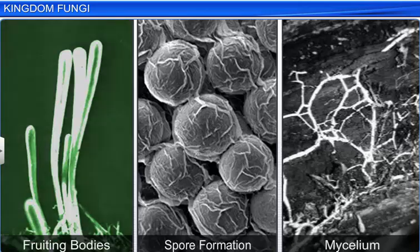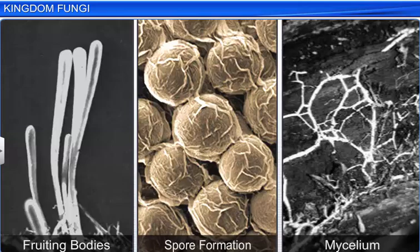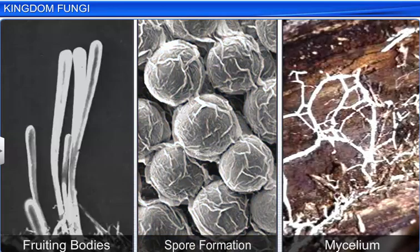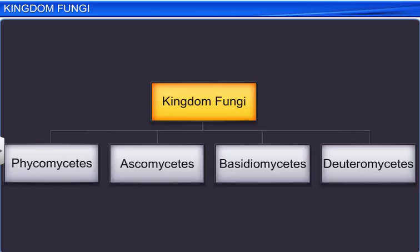Together, the fruiting bodies, the mode of spore formation, and the morphology of the mycelium form the basis of the division of the kingdom fungi into various classes. There are four main classes of fungi: Phycomycetes, Ascomycetes, Basidiomycetes, and Deuteromycetes.